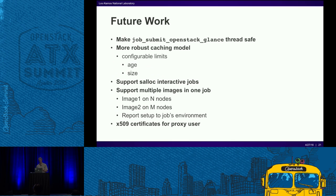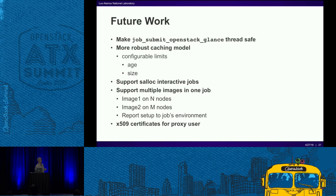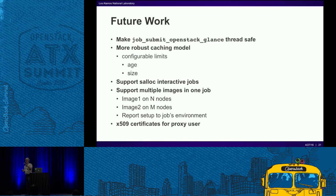All the demo jobs were sbatch jobs. salloc for an interactive allocation is a strange beast — when a user types salloc, they're left on the node where they typed it. All it does is set some environment variables and give you an allocation on compute nodes. The user has to grep out their node list and interactively log in. We don't support this model yet — SPANK doesn't behave the way I'd like it to in an salloc context, and I've had trouble getting the image to actually download there.